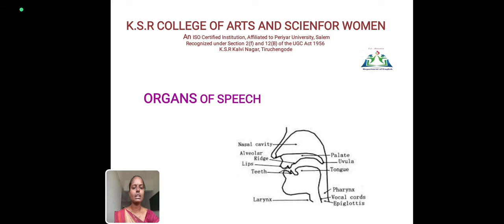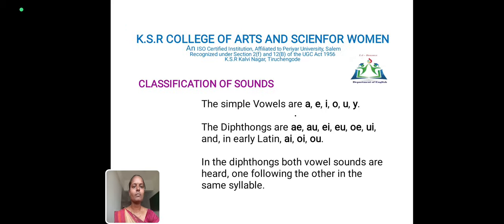While speaking or pronouncing words, we use these organs. Next, we are going to look at the classification of sounds. There are many classifications of sounds. The simple vowels are A, E, I, O, U — we already know about these.